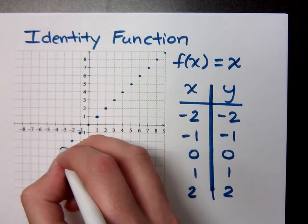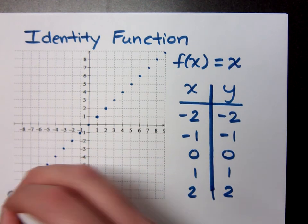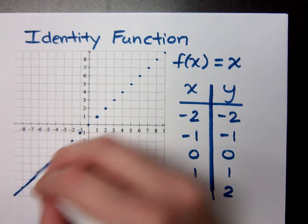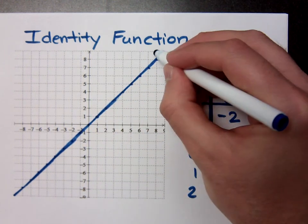So you're going to have all of these points here. And whenever you're graphing something, the more points you have, the more accurate your graph will be. So when we connect the dots, this is what your graph should look like. You put the arrows on your graph.